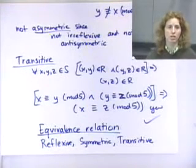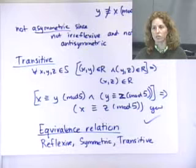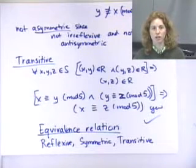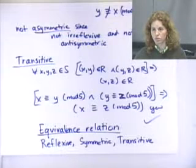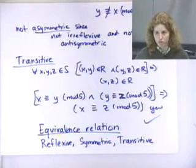Whenever something breaks things down into partitions where everything in there is considered equivalent, you have an equivalence relation. If you hear the words 'the same' in the definition, you've got an equivalence relation. For example: x has the same hair color as y — that's reflexive, symmetric, and transitive. So if you see 'the same,' think equivalence relation and you don't even have to check all the properties individually.